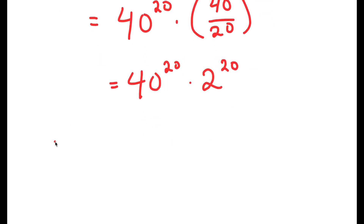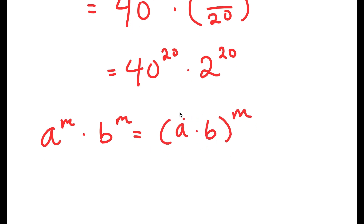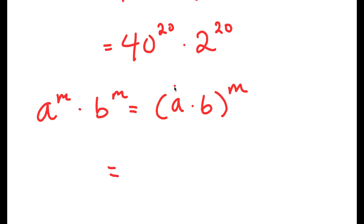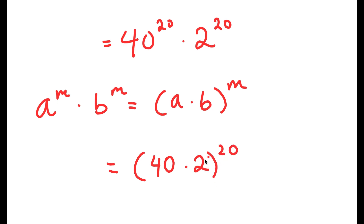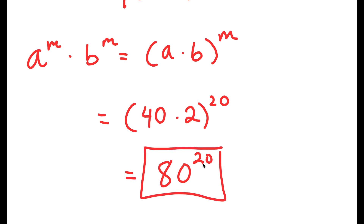Now, if I have something in the form a to the power of m times b to the power of m, this is equal to a times b to the power of m. So 40 to the power of 20 times 2 to the power of 20 is equal to 40 times 2 to the power of 20, which is equal to 80 to the power of 20. So this is my answer to this problem.